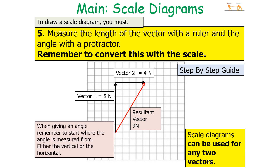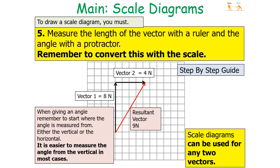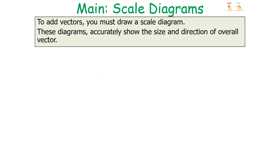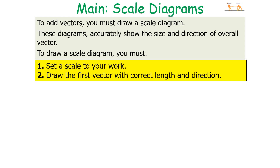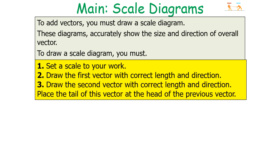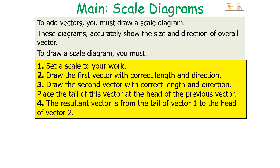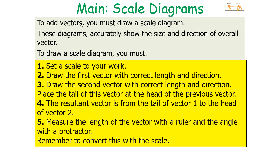When giving the angle, remember to state what it is measured from — either from the horizontal or from the vertical. In most cases it's easier to measure from the vertical. To summarise adding vectors: set a scale, draw the first vector with correct length and direction, draw the second vector placing its tail at the head of the first, identify the resultant from the tail of vector 1 to the head of vector 2, then measure the length and angle and convert values back using your scale.